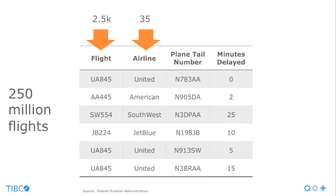The plane tail number is a unique identifier for the plane itself. Airlines reuse these over different routes and they are usually retired after 15 years depending on how many flights the plane has done. This is a high cardinality dimension — in our case containing a hundred thousand members. Finally, minutes delayed is just a measure, and its cardinality isn't as important because we won't be grouping by a measure.